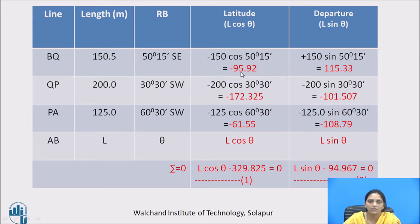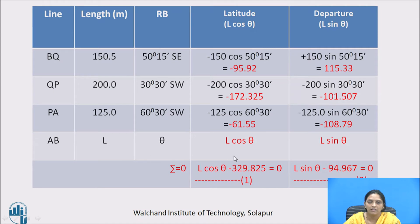So we will get: latitude of line BQ is minus 95.92 and departure is 115.33. Line QP latitude is minus 172.325 and departure is minus 101.507. Line PA latitude is minus 61.55 and departure is minus 108.79. But for AB, length and theta both are unknown, so latitude is L cos theta and departure is L sin theta.